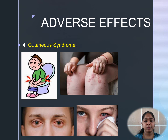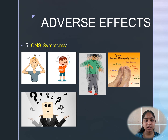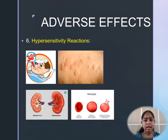Cutaneous syndrome presents with flushing, pruritus with rashes, and redness and watering of the eyes. CNS symptoms include headache, drowsiness, dizziness, ataxia, confusion, and peripheral neuropathy in the extremities with muscle weakness. Hypersensitivity reactions include fever, rashes with urticaria, and rarely renal manifestations with nephritis, hemolysis, hematuria, and renal insufficiency.